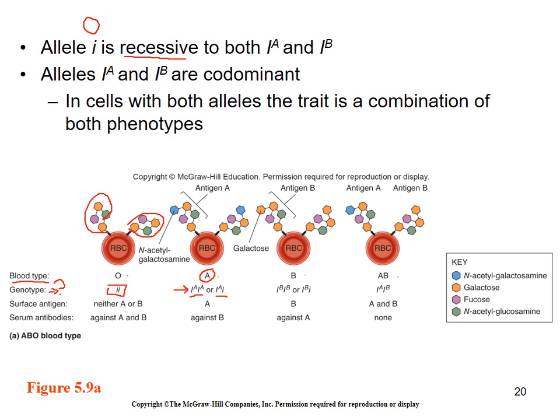If one parent gives an A and the other gives a B, because they are equal strength, the child will be AB. This is an example of codominance — two alleles of equal strength. We can predict what blood types will be present in offspring. For instance, if dad is AB and mom is O — since O means genotype OO — dad's sperm carries either A or B, and all of mom's eggs are O. So offspring will be either AO, blood type A, or BO, blood type B — a 50% chance of either.